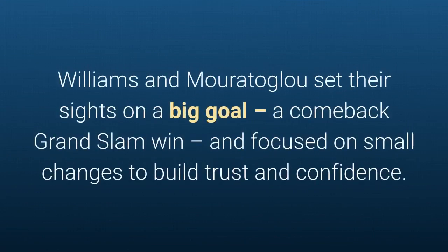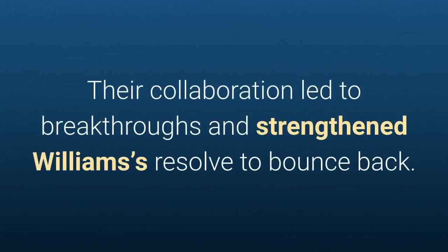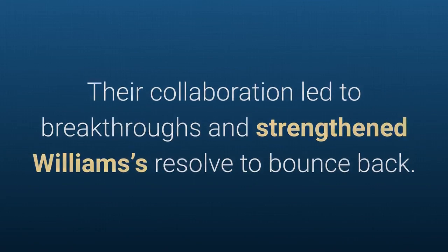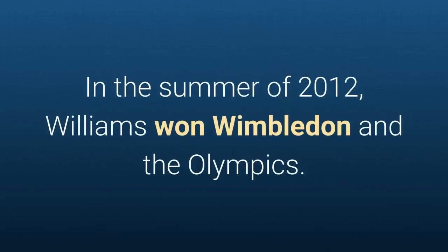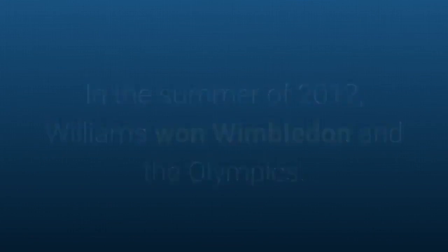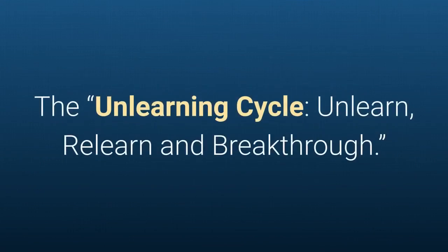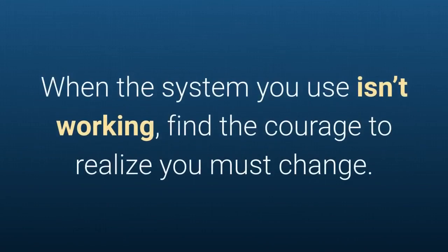Williams and Mouratoglou set their sights on a big goal — a comeback Grand Slam win — and focused on small changes to build trust and confidence. Their collaboration led to breakthroughs and strengthened Williams's resolve to bounce back. In the summer of 2012, Williams won Wimbledon and the Olympics.